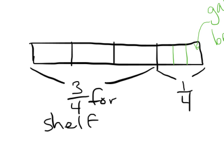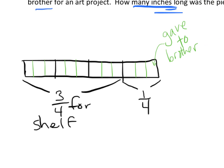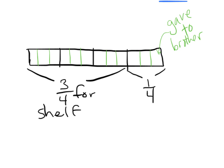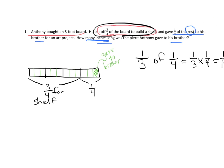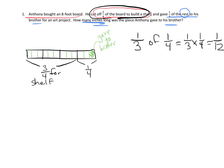Another way is to use logic. If this big black unit was cut into three pieces, then each of the four units is cut into three pieces, giving us 12 little units altogether. Out of those 12 little units, his brother was given one — so that's one out of 12. We can use logic to get that answer.